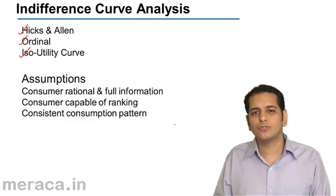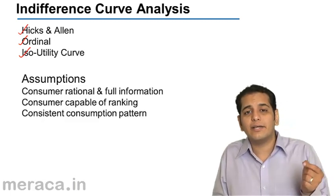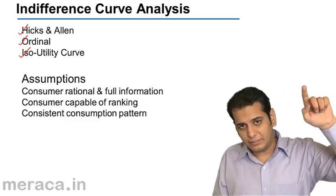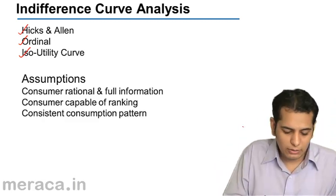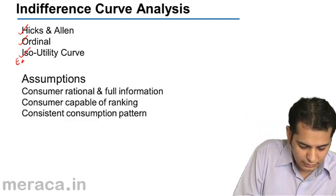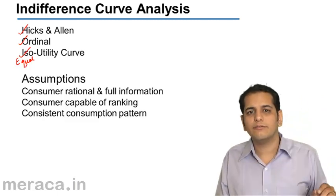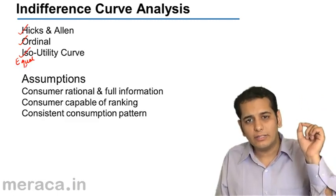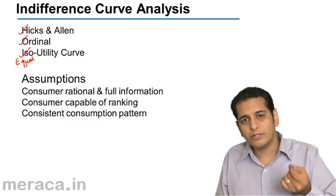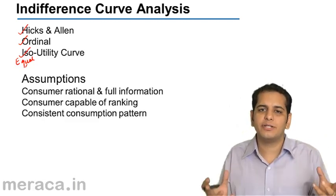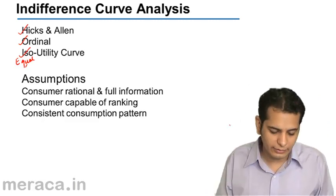Indifference curves are also called ISO utility curves. They are called ISO utility curves because the curve in its entirety gives equal utility — ISO means equal. The whole curve gives you a level of equal utility. You derive the same level of satisfaction from whatever combination of commodities you use on the same indifference curve, and thus it is called an ISO utility curve.